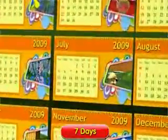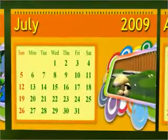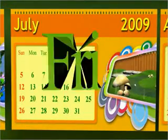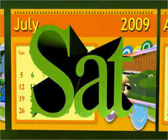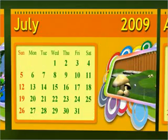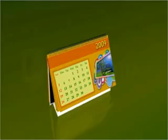Each week has seven days. The week begins with Monday, followed by Tuesday, Wednesday, Thursday, Friday, Saturday, and ends on Sunday.